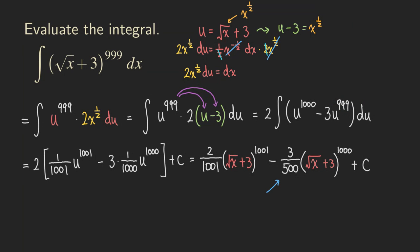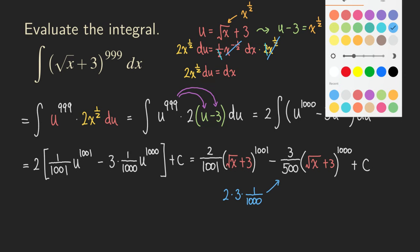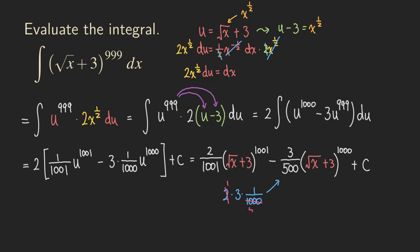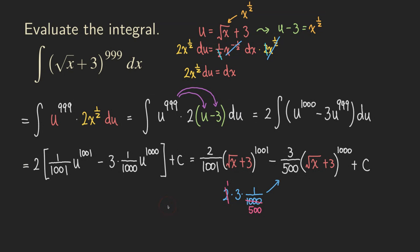That 3 over 500 comes from distributing 2 times 3 times 1 over 1,000. The 2 cancels to make 1, and the 1,000 becomes 500. So that's it for this problem. A simple u-substitution can help you integrate something that would otherwise require the binomial theorem to expand — which would be terrible given the power. We'll do more problems like this next time. Thank you for watching. Please subscribe to my channel for support.